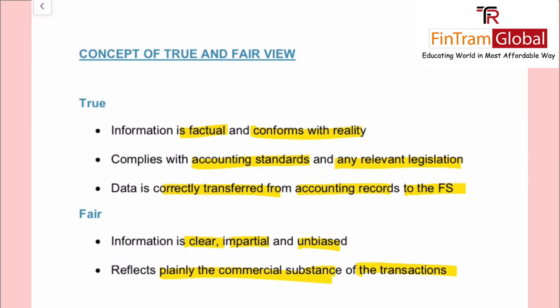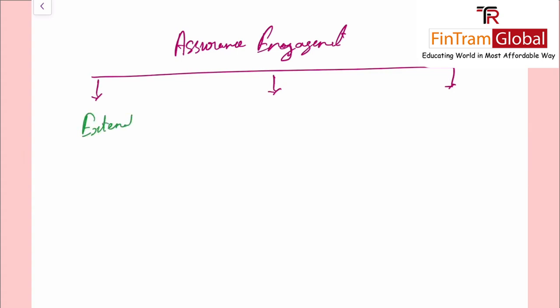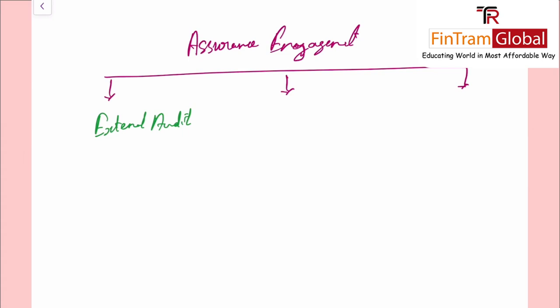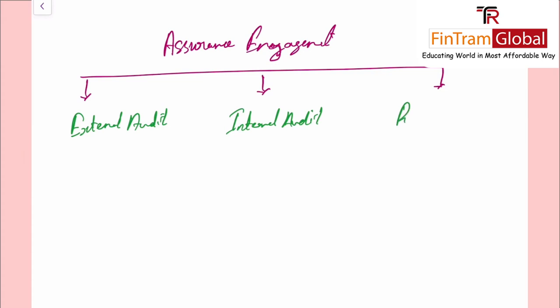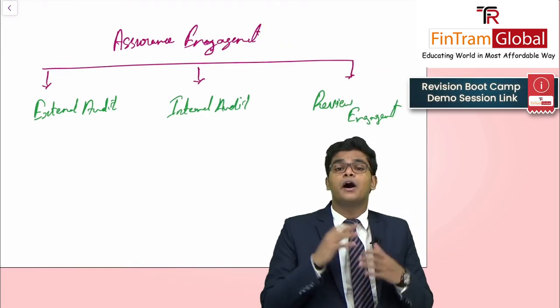Now we will learn about the types of assurance engagement. Assurance engagement is a broad concept, and external audit is just one type. There are three main types: external audit, internal audit, and review engagements. External audit is further classified into sub-categories. Internal audit is very different from external audit. These are the three types of assurance engagement we will learn throughout the AA syllabus.